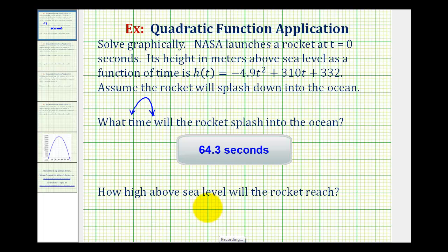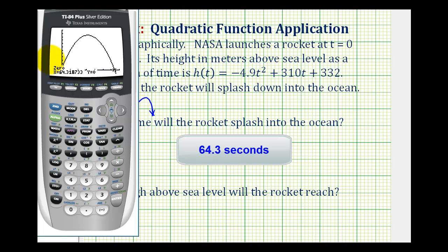Next we want to know how high above sea level will the rocket reach. So going back to our graph, remember the y values represent the height, so the vertex of this high point here would be the highest point above sea level that the rocket reaches. So now we're going to press second, trace again for the calculation menu, and now select option four for maximum.